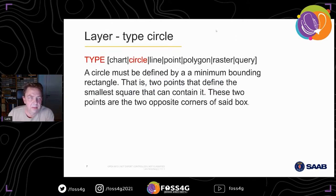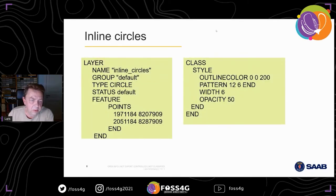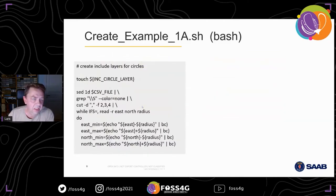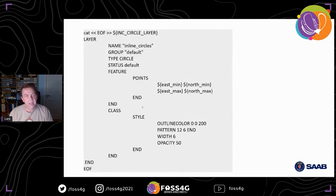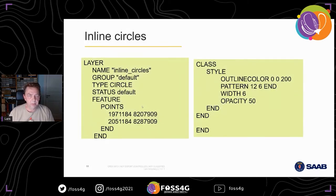Layer type circle is actually a circle defined by the boundary rectangle of the circle with two points. The example shown is with inline features where you have the points, so you have to repeat that in your map file each time. So I created the example — all these are available — I read the CSV file and then I have an inline file that prints the map files. You can see that in the examples on GitHub. I ended up with these inline circles.